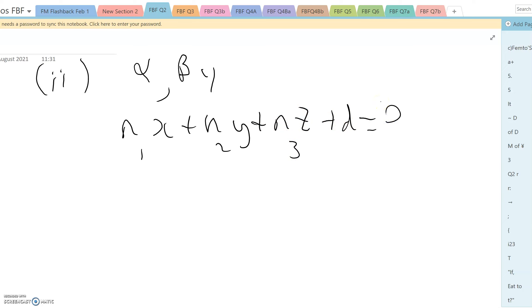In that case, the distance between the two is going to be the modulus of alpha n1 plus beta n2 plus gamma n3 plus d, all over the square root of n1 squared plus n2 squared plus n3 squared.